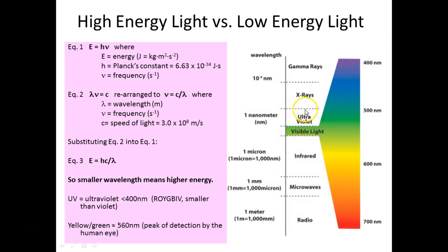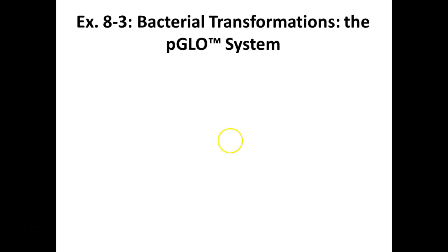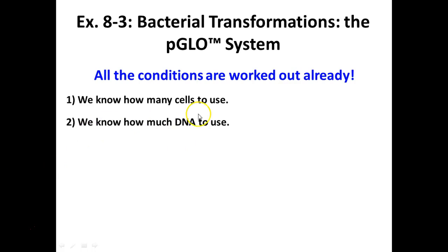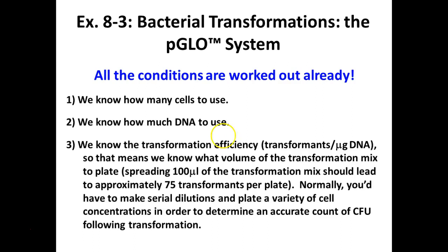All the conditions have been worked out already — it's a kit we buy from BioRad. We know how many cells to use, how much DNA to use, and the transformation efficiency expected for this kit: how many transformed cells per milligram of DNA. We know the volume to plate — you're going to plate 100 microliters. Theoretically we should get about 75 colonies on our plates. Normally you'd do serial dilutions if you didn't know this, and count your CFUs.